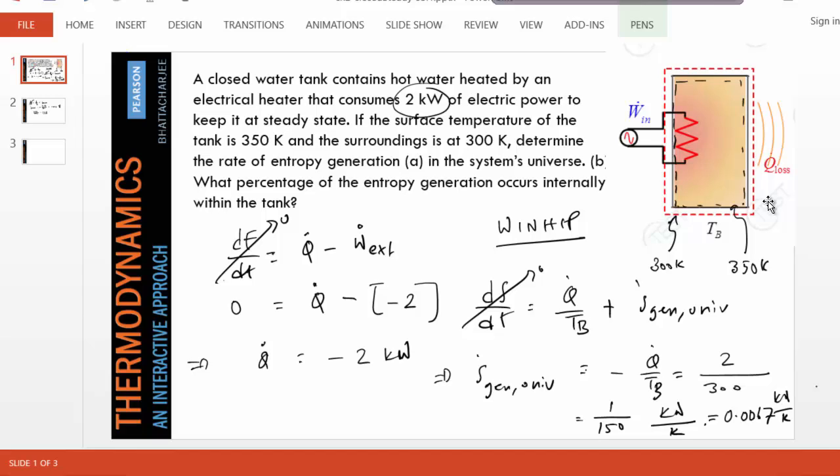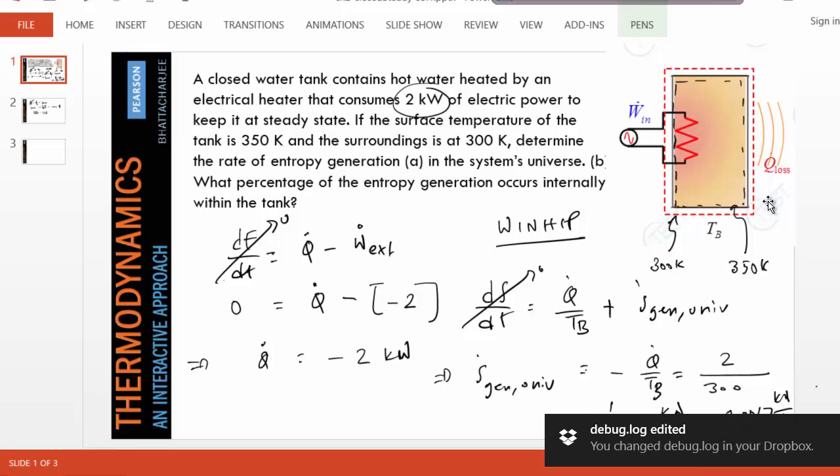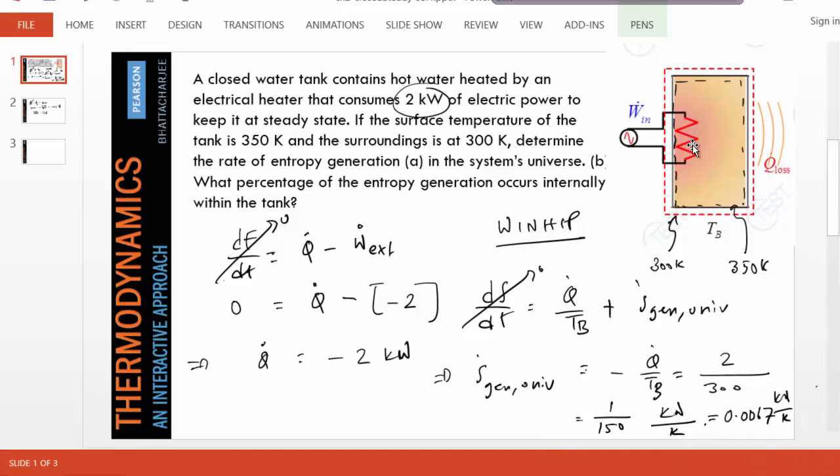If you ask this question: what is causing this generation? You can understand that internally inside the tank, there is the electrical potential difference that is getting destroyed. And then this part of the tank is very high - let's assume the entire tank is the same temperature. Even then, as the heat comes out from the tank to outside, there will be temperature difference causing entropy generation.